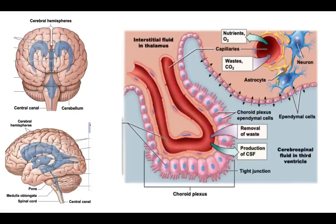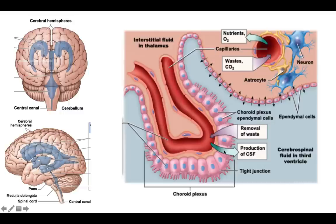Cerebrospinal fluid is produced as a filtrate from fluid leaking out of capillaries in areas called the choroid plexus. The choroid plexus are special areas where neural tissue invaginates into some of the ventricles. Lining the neural tissue are specialized cells called ependymal cells that help produce cerebrospinal fluid. Fluid leaks out of the capillaries, passes through interstitial fluid and through the ependymal cells, which then secrete the cerebrospinal fluid into the ventricles. The ependymal cells also remove waste from the cerebrospinal fluid.